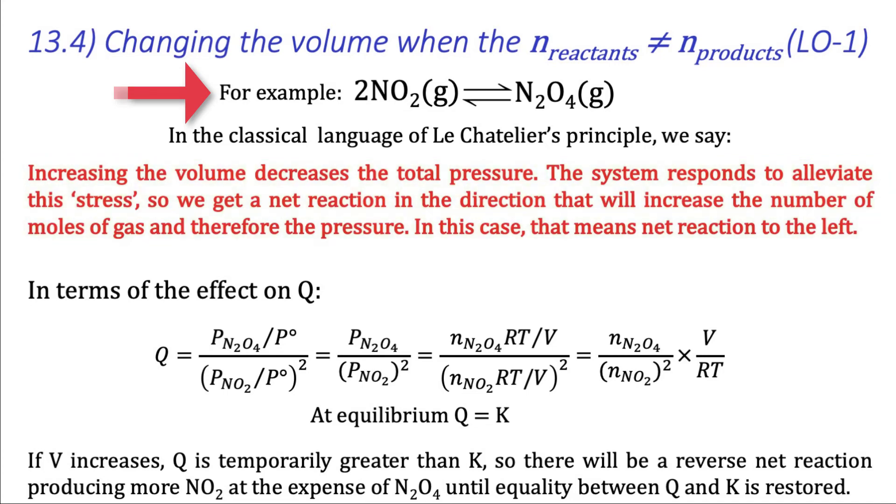We can also come to the same conclusion by assessing the effect of the volume increase on Q. To do this, we write out the expression for Q, and then use the ideal gas law to replace the partial pressures. After simplification, we discover that Q is proportional to the volume.